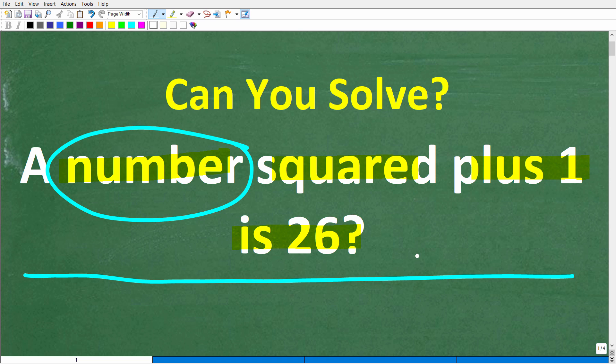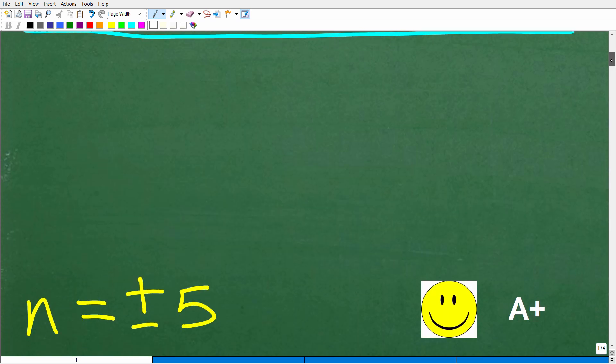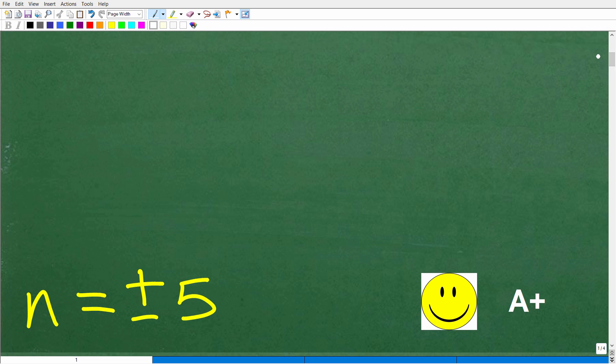I'll show you the correct answer in just one second, then I'm going to solve this problem step by step. Let's go ahead and take a look at the answer. The correct answer is actually two numbers, and I'm going to use this variable n to represent this number. So the correct answer is both positive and negative 5.